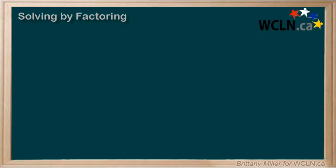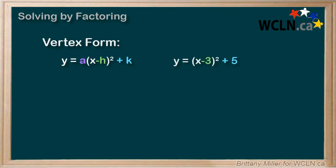We can graph quadratics that are written in vertex form, which is a(x-h)² + k. An example of this is (x-3)² + 5.